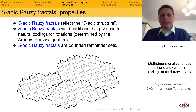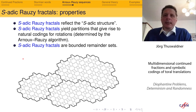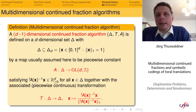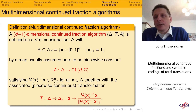Here is an example of an S-adic Rauzy fractal. Like a self-affine set, this Rauzy fractal has a natural subdivision. However, the pieces of the subdivisions look different from the large pieces — there is no self-affinity present. These S-adic Rauzy fractals reflect the S-adic structure; this subdivision structure is governed by the S-adic sequences. The S-adic Rauzy fractals yield partitions which give rise to natural codings for rotations, determined in our case by the Arnoux-Rauzy algorithm, and also these S-adic Rauzy fractals are bounded remainder sets.